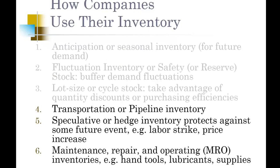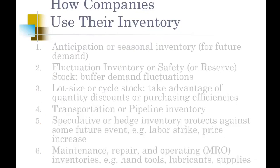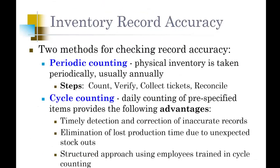Maintenance, repair, and operating inventory: within a hospital setting you have the masks and gloves; within a manufacturing facility you have the lubricants and oil. With maintenance, repair, and operating inventory, if you do not have that inventory, you run the risk of not being able to serve your customers or produce product.